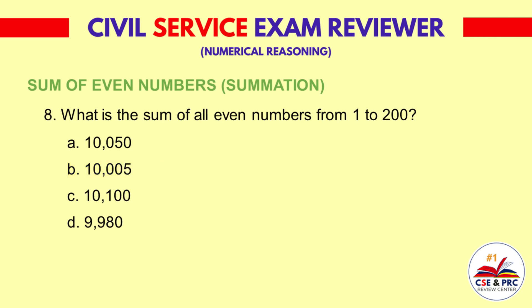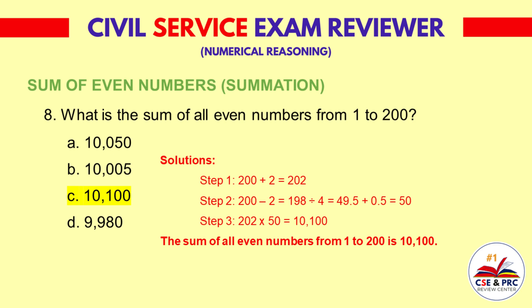Question 8: What is the sum of all even numbers from 1 to 200? a. 10,050  b. 10,005  c. 10,100  d. 9,980. The answer is c. 10,100.